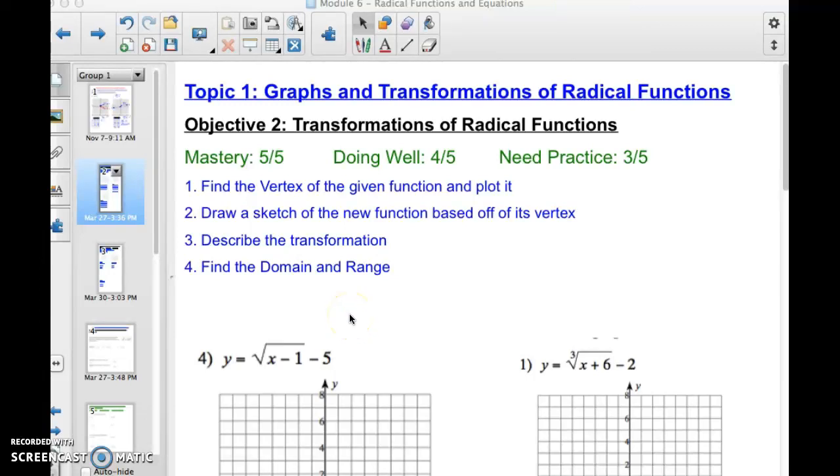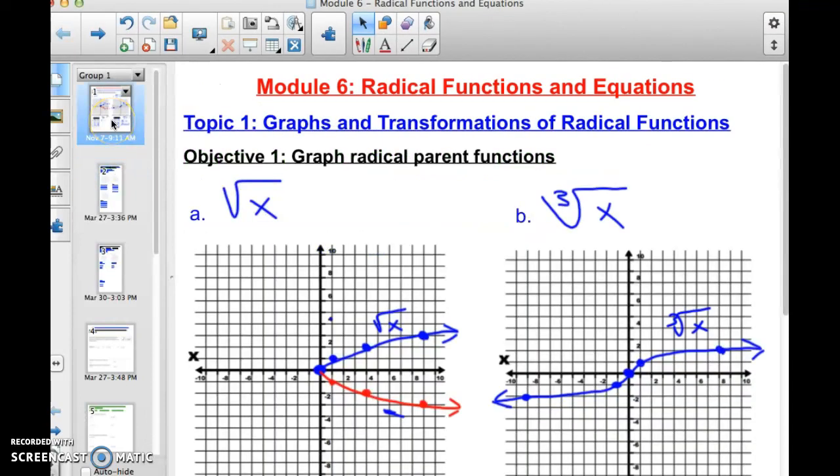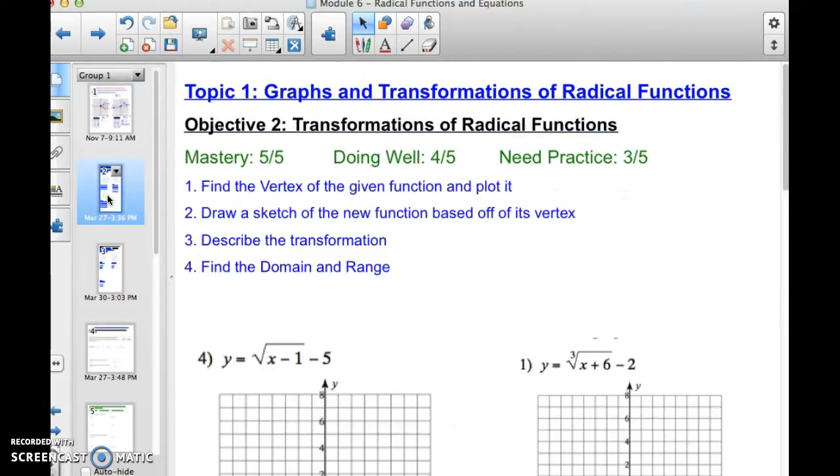Objective two of topic one is the transformations of radical functions. So we just got done talking about the parent function y equals the square root of x and cube root of x. And now we're going to look at how these graphs move around based off that parent function.